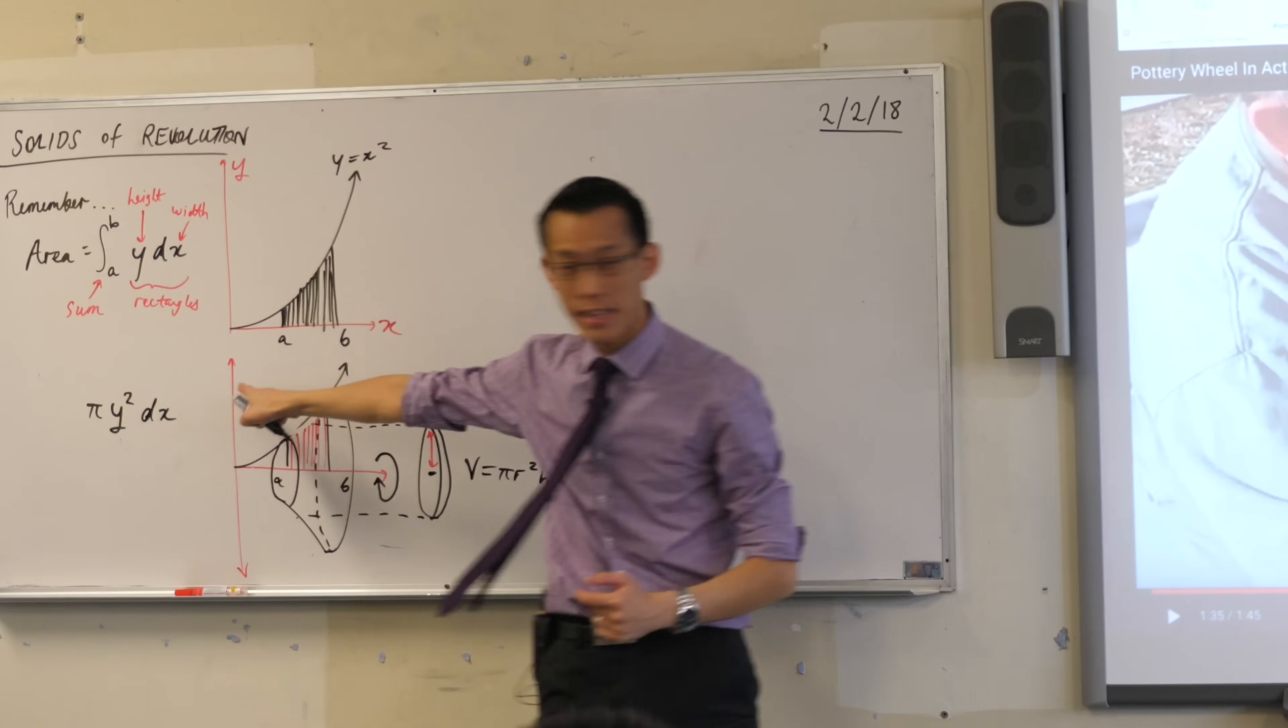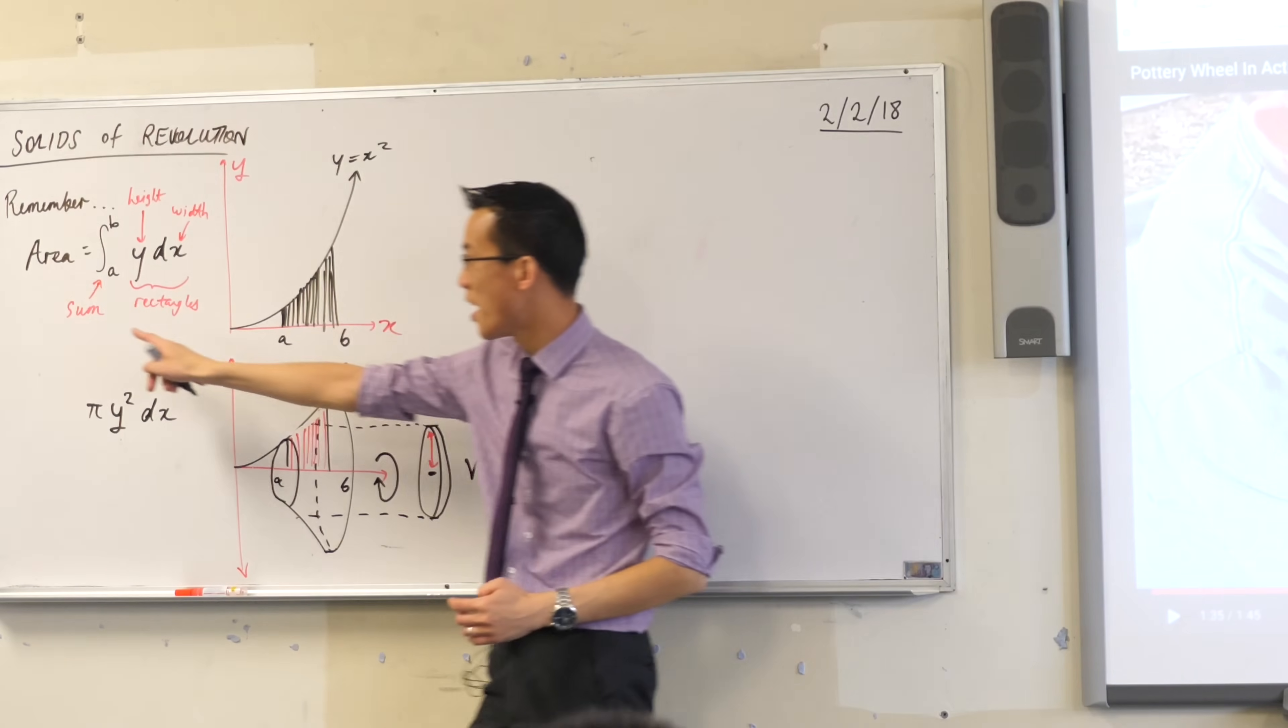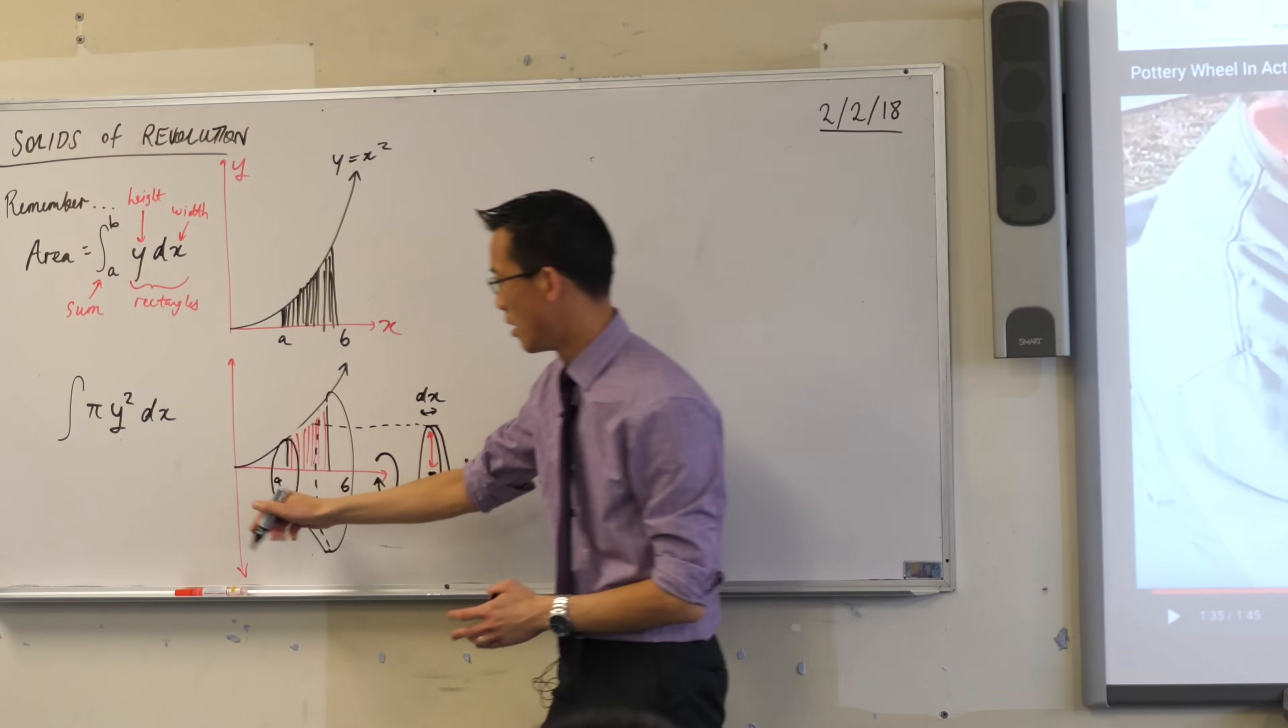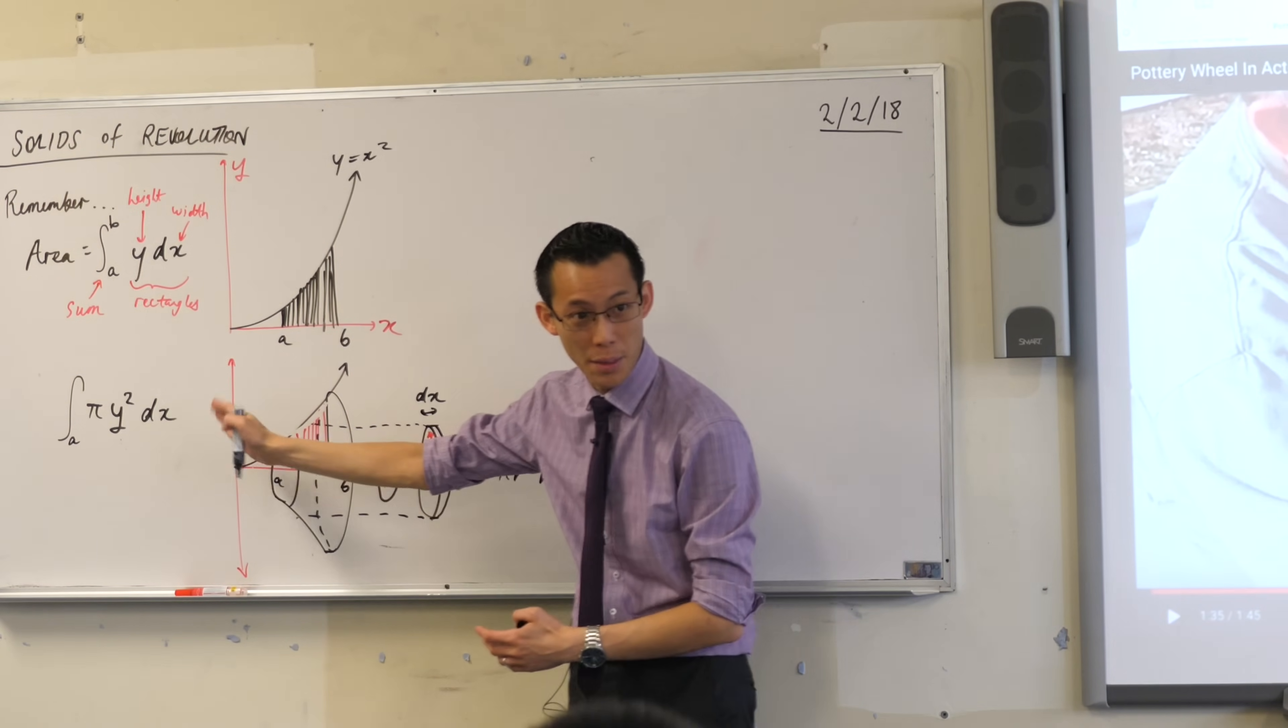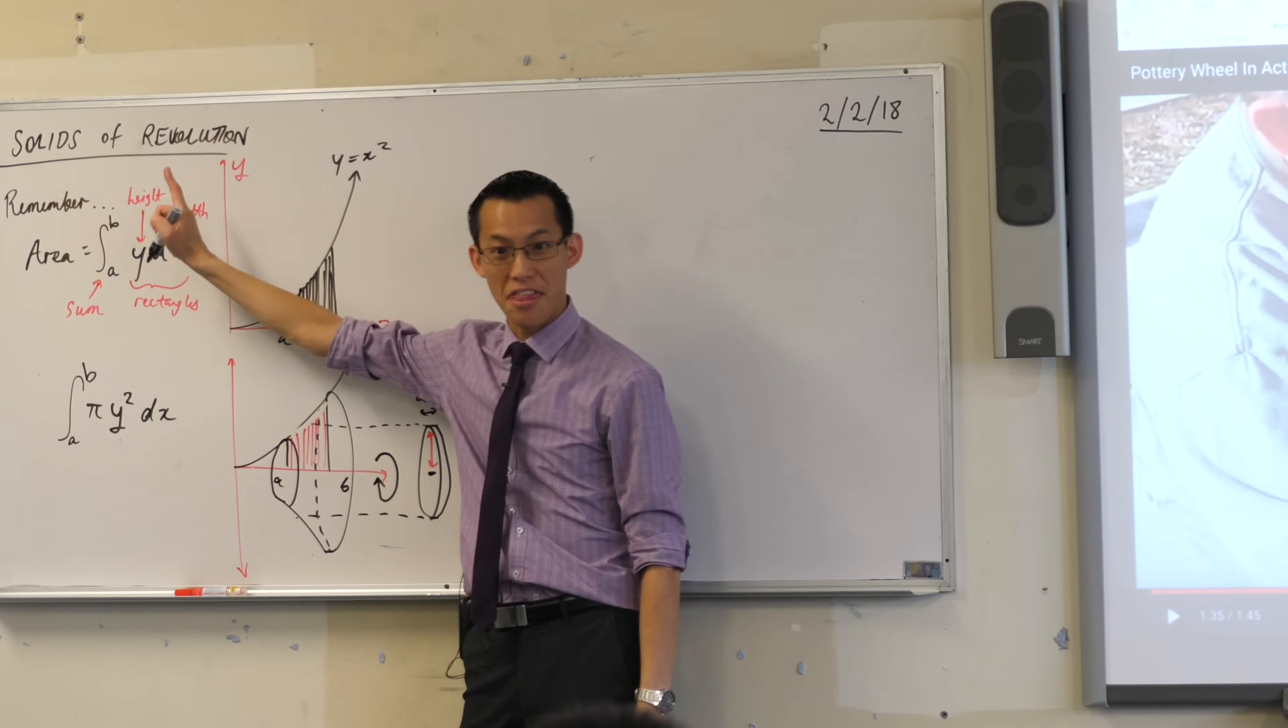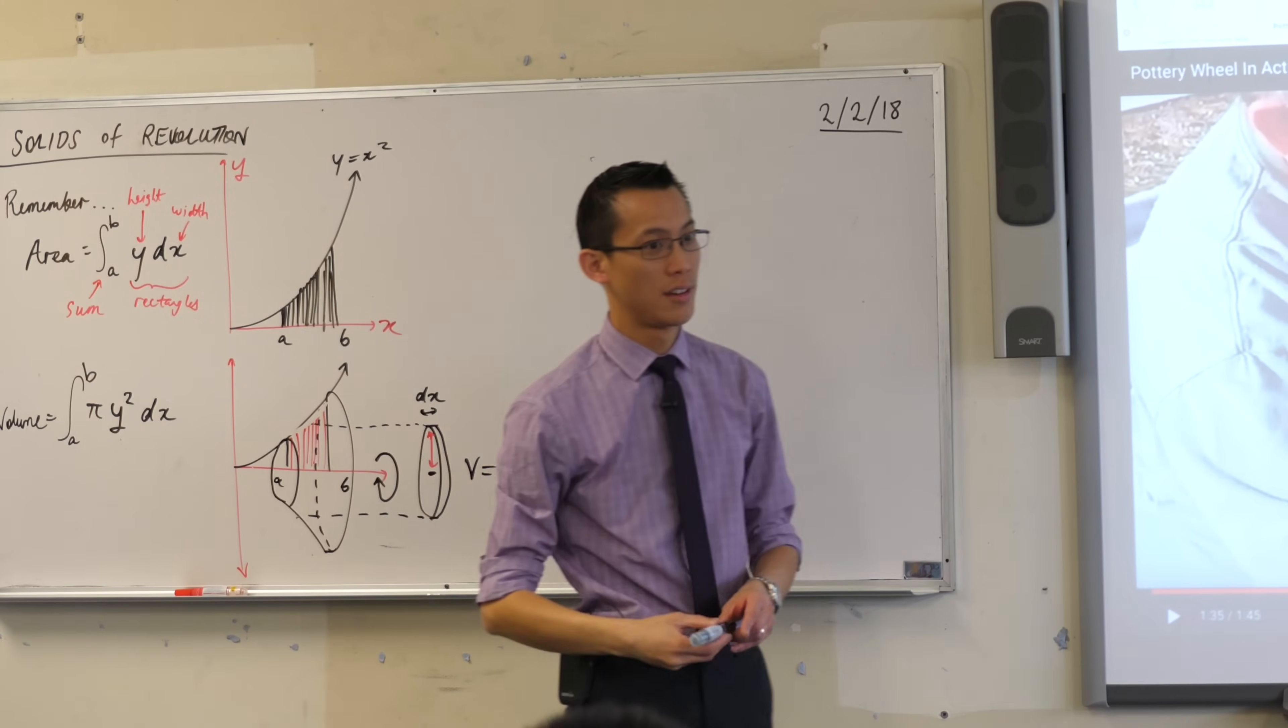Does that make sense? See that object there? That's a cylinder, one of them. But one of them does not make the whole solid. I need to sum all of them, don't I? So thankfully I have good notation for this. I'm going to start with the leftmost cylinder, and then I'm going to progress all the way through until I get to the rightmost cylinder. Like so. That's area. This is volume.